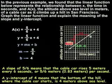So, a y-intercept of 4 means that the bottom of the hill, where the cable car starts, is 4 meters above sea level.